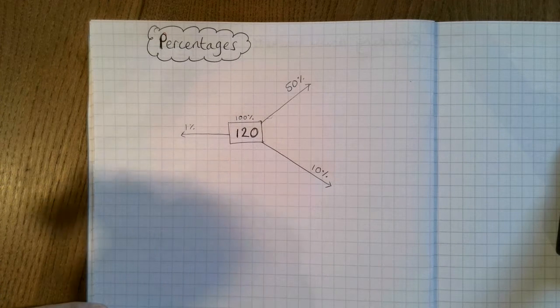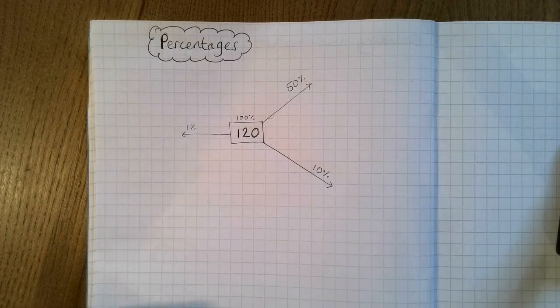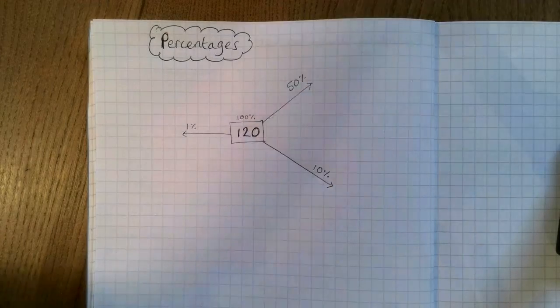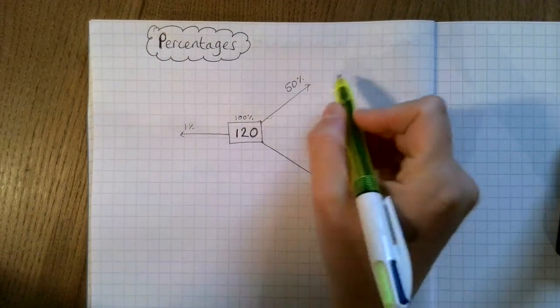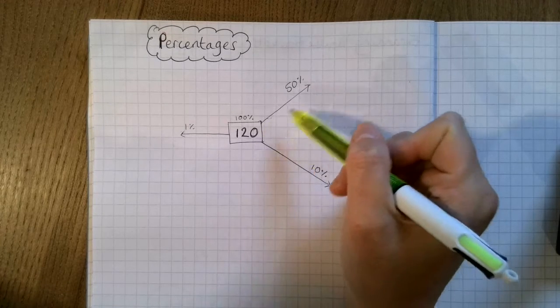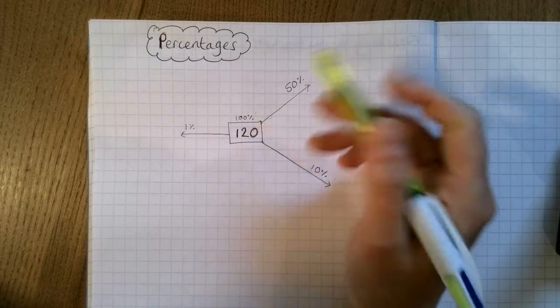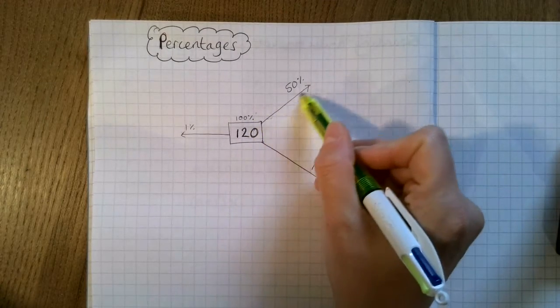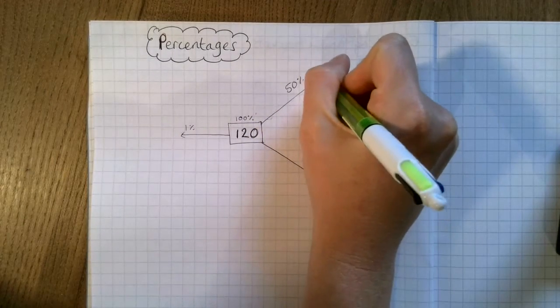So I imagine you're all shouting out because you're like yeah we can do this. To find 50% we need to half it. So 50% is half of 100%. So half of 120 is 60.